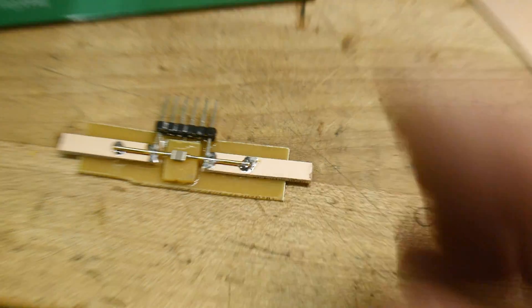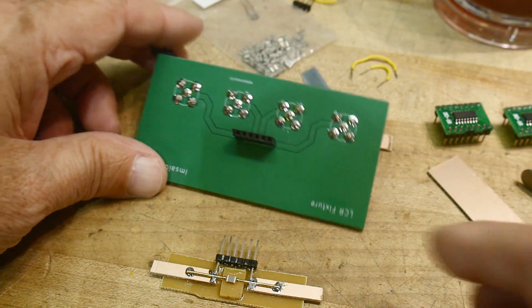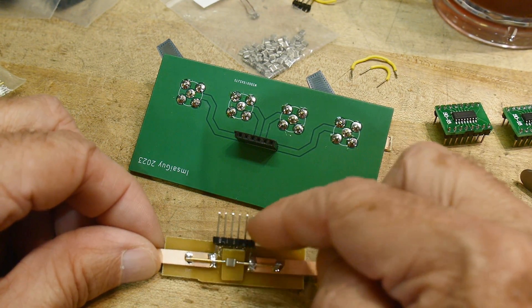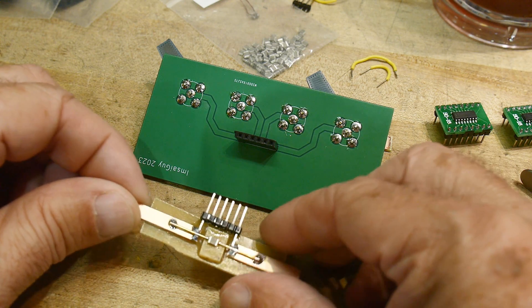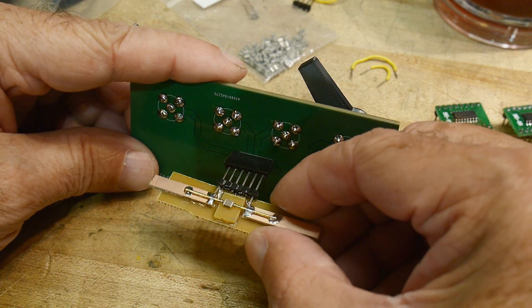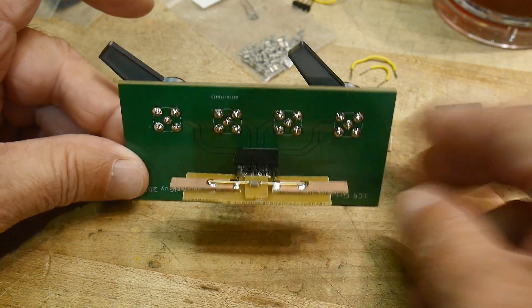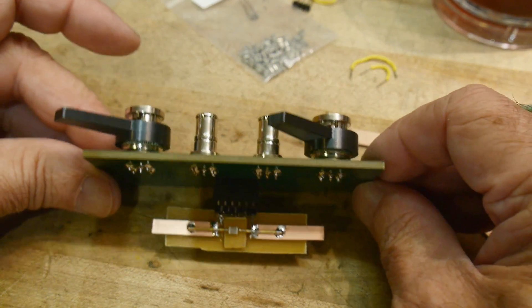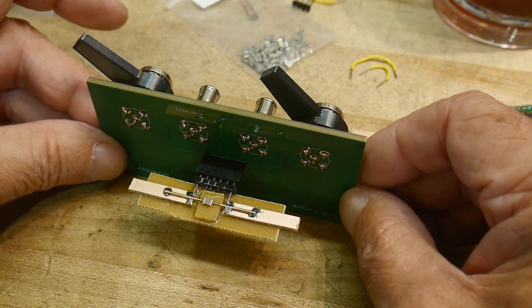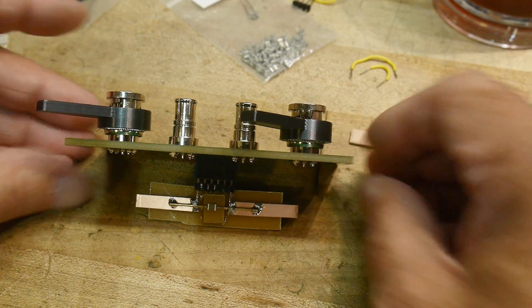And then once you got that going, I soldered on a connector that I can just plug into my board. Now when I put this on, I have a surface mount test fixture. How's that? All right, let's go see if it works.